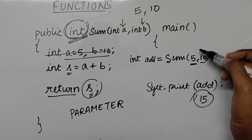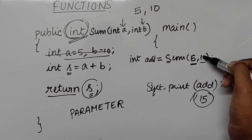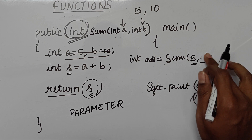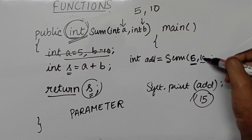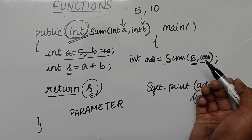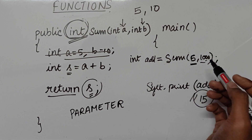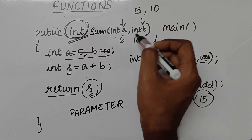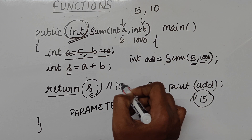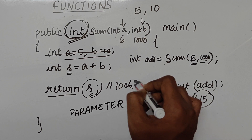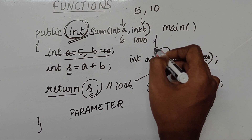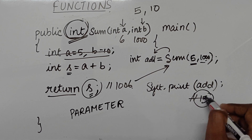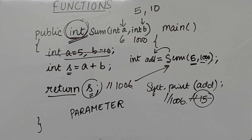So let's say you do not want those two numbers — you can send any other numbers. For example, you can send 6 and 1000. So `a` will be 6, `b` will be 1000, these two will be added, the result will be 1006, sent back, stored in `add`, and printed as 1006. So if you learned something from this video, please leave a like and consider subscribing to my channel. Thank you.